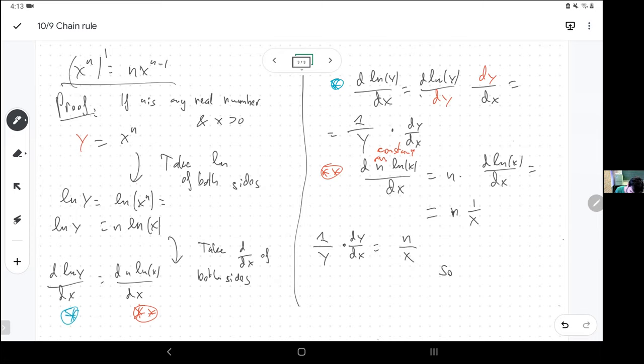And so step one, take the logarithm. Step two, take the derivative. Step three, solve for the derivative you want to know. It's already by itself on the left side. So all I gotta do is get rid of one over y dividing, or multiplying by y.